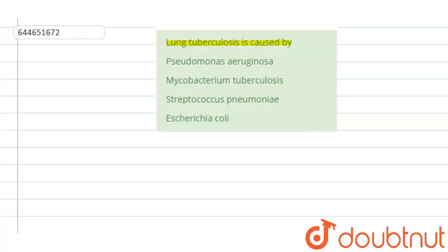To solve this question, let us first understand what tuberculosis is. Tuberculosis is caused by a type of bacterium called Mycobacterium tuberculosis. It spreads when a person with active tuberculosis sneezes or coughs, releasing the bacteria from their lungs, which can then infect a person who inhales those droplets. Tuberculosis is a very serious disease that can cause respiratory tract and lung failure.